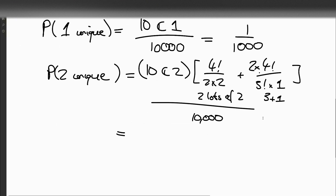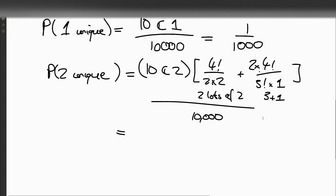So what does this give us? Ten choose two times four factorial over two times two, plus two times four factorial divided by three factorial times one, and then divide that by ten thousand. And this gives us sixty-three over a thousand — that's the probability of getting two unique digits.